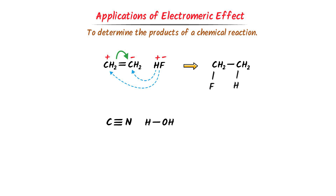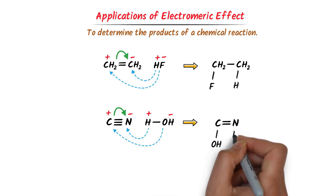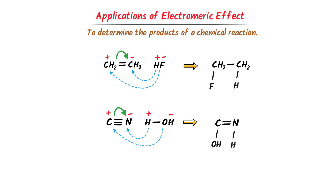Consider this second reaction — pause the video and try to solve it. Nitrogen is a highly electronegative atom and will attract pi electrons strongly. Hydrogen is a positive species and hydroxide is a negative species. The positive hydrogen attacks the negative nitrogen, and the negative hydroxide attacks the positive carbon. As a result, we get this organic compound. Thus, using the electromeric effect, we can easily determine the products of any chemical reaction. I hope you have learned all about electromeric effect.